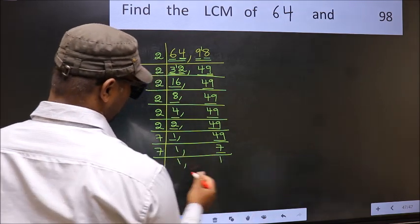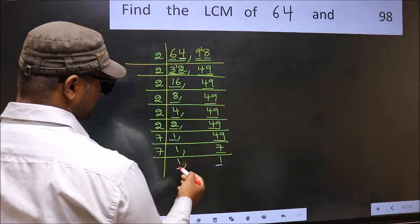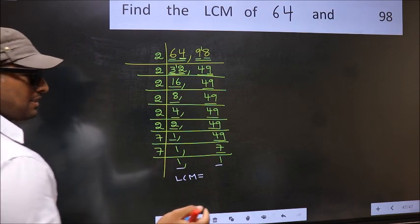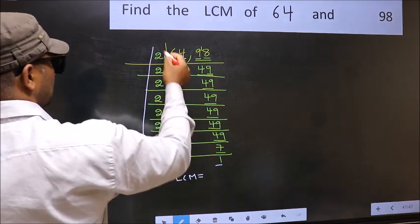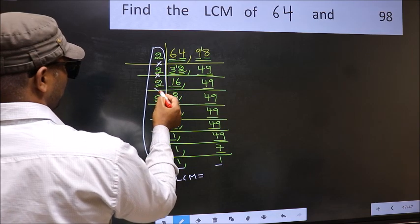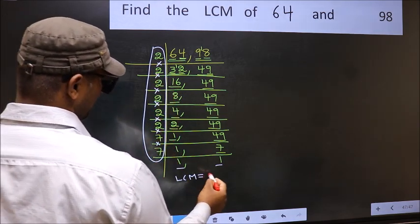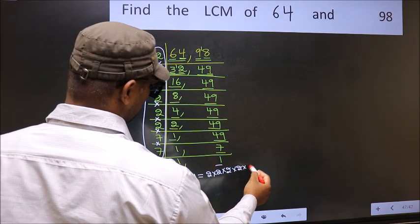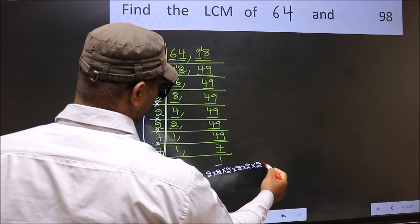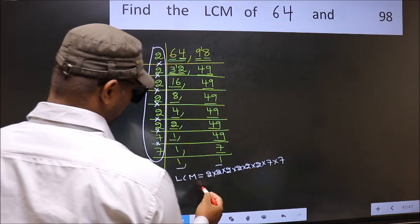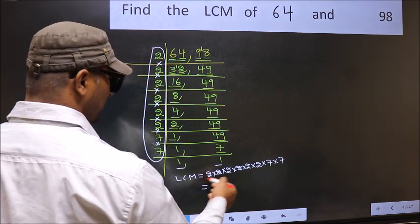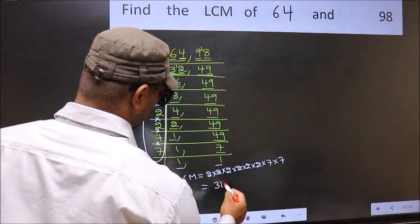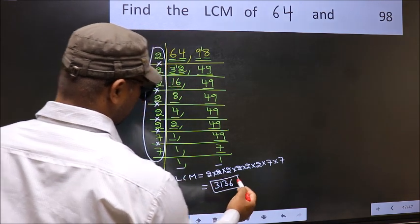So we got 1 in both places. Our LCM is the product of these numbers: 2 times 2 times 2 times 2 times 2 times 2 times 7 times 7. When we multiply these numbers, we get 3136. So 3136 is our LCM.